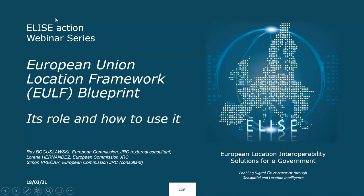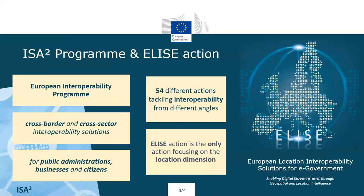So maybe, as you can see on the next slide, first a few words about ELISA for those who don't know. ELISA stands for European Location Interoperability Solutions for E-Government, and is a part of the ISA-Squared Programme, a European Interoperability Programme, which is aiming at providing cross-border and cross-sector interoperability solutions for public administrations, businesses, and citizens.